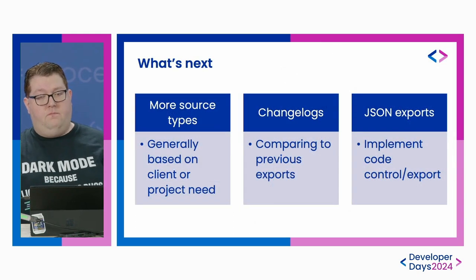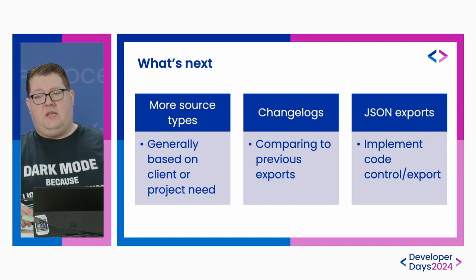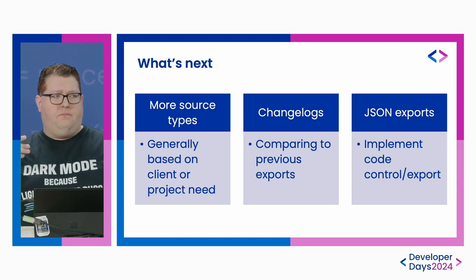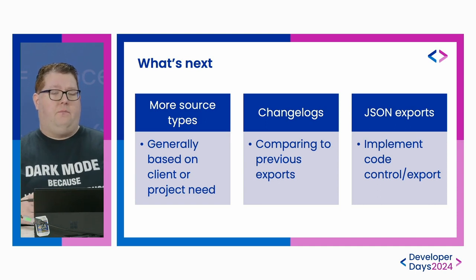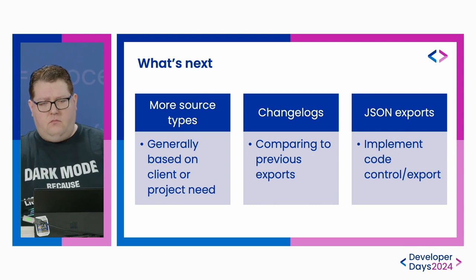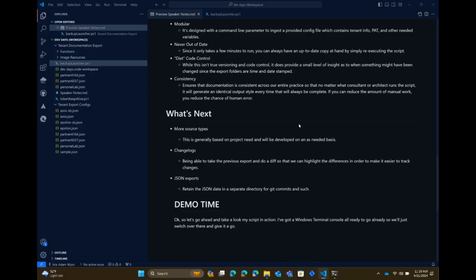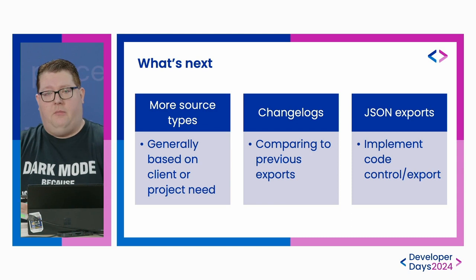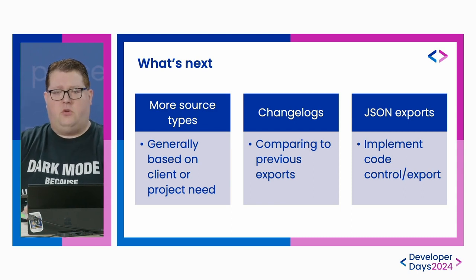As far as what's next, we're going to keep adding source types as the need comes up — for example, adding a connector type for DocuSign. We're also going to implement change logs so we can see what changed between two versions, and if something changed or caused a regression, we can highlight those changes to do a rollback. The other thing we're looking into is JSON exports so you could do true code control, storing all those objects in GitHub or GitLab and doing actual versioning on it.